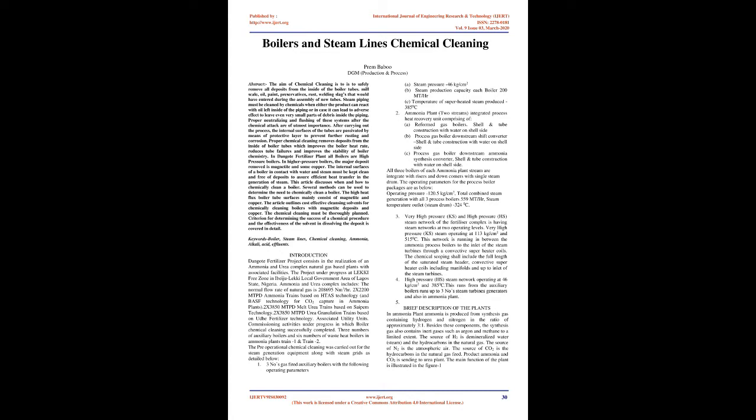After carrying out the process, the internal surfaces of the tubes are passivated by means of a protective layer to prevent further rusting and corrosion. Proper chemical cleaning removes deposits from the inside of boiler tubes, which improves the boiler heat rate, reduces tube failures, and improves the stability of boiler chemistry. In Dangote Fertilizer Plant, all boilers are high-pressure boilers. In higher-pressure boilers, the major deposit removed is magnetite and some copper. The internal surfaces of a boiler in contact with water and steam must be kept clean and free of deposits to assure efficient heat transfer in the generation of steam.